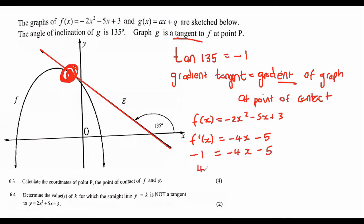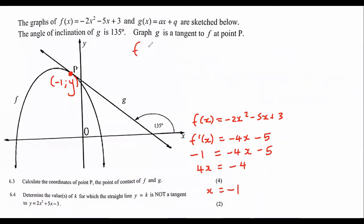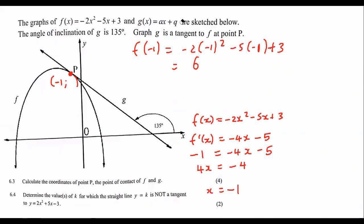Then I work out what my x value will be, and you should find that x is equal to minus one. So the x value at this point of contact is minus one. We don't know the y value yet, but that's easy — just plug that x value into the equation to get the y value. Substituting minus one into this equation gives us six. So the coordinates of P are negative one and six.